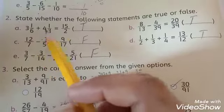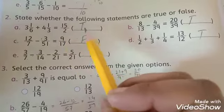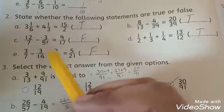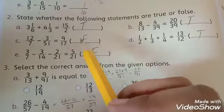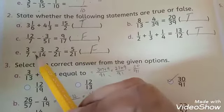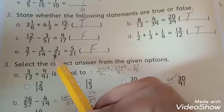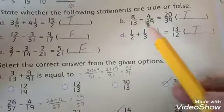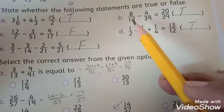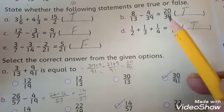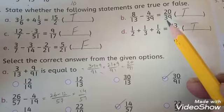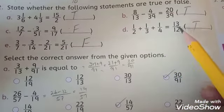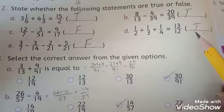When we add these two fractions we get this answer, so it is True. When we subtract these two fractions the answer will be changed, so it is False. When we subtract these three fractions we get 20/39 by 39, so it is True. When we add this fraction we get answer 13/12, so it is also True.